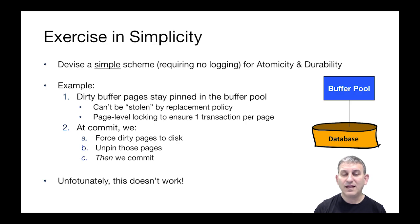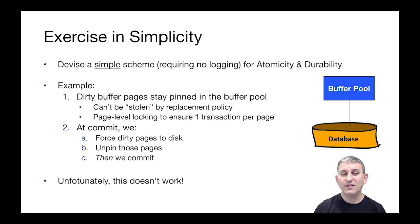Now we just have to deal with commit. At commit time, we take all those pinned pages for our transaction and force them to disk together, then unpin the pages so the buffer pool can replace them, and commit only after we know all the pages are on disk. By committing after writing all the pages, we can be sure those pages are flushed to the database disk. The first property gives us atomicity — we'll never get a partial set of pages written — and the second gives us durability.